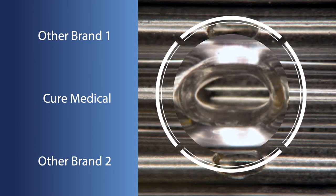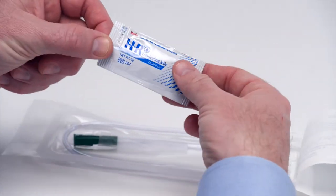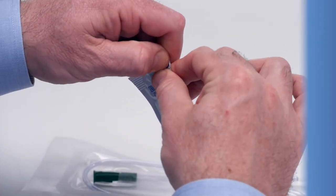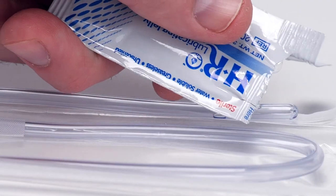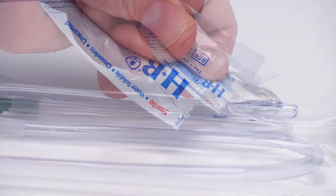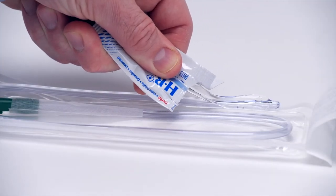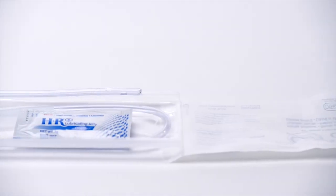Open the packet of water-soluble lubricant. Apply a liberal amount of lubricant to the tip and first several inches of the catheter.